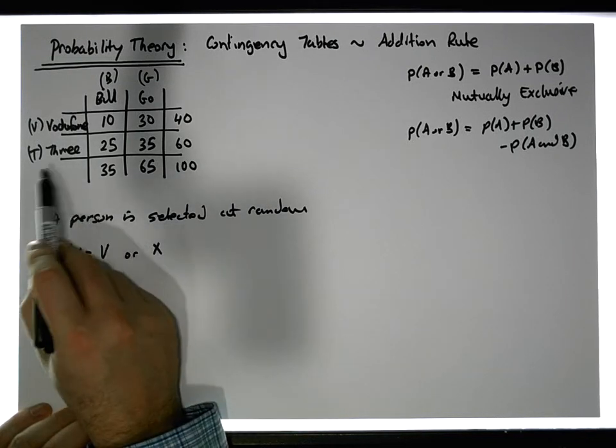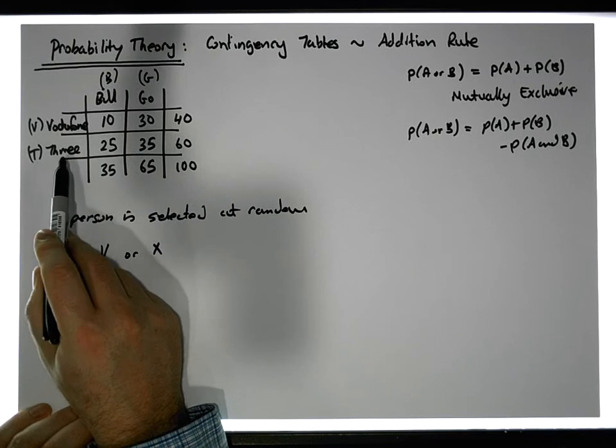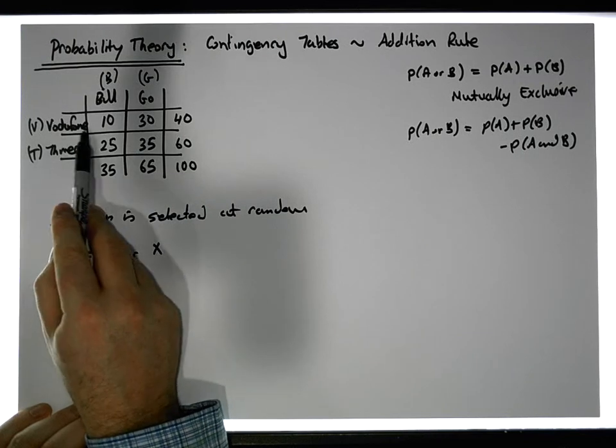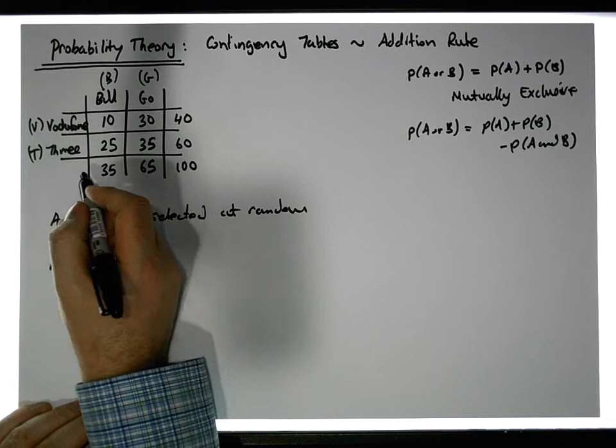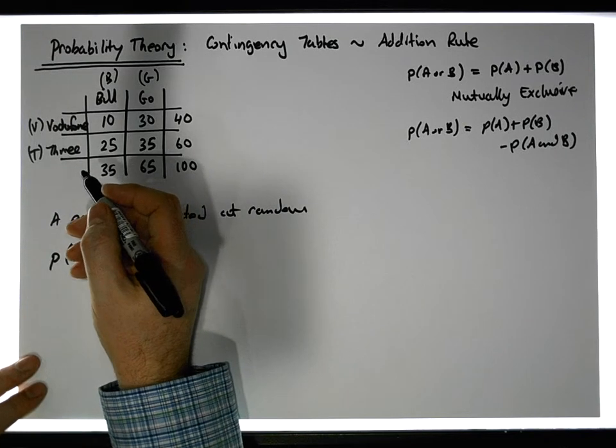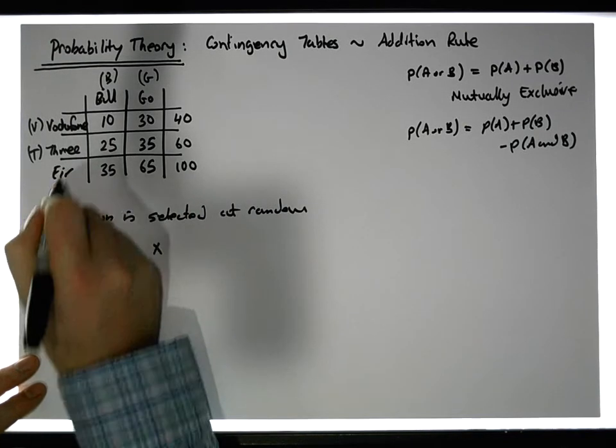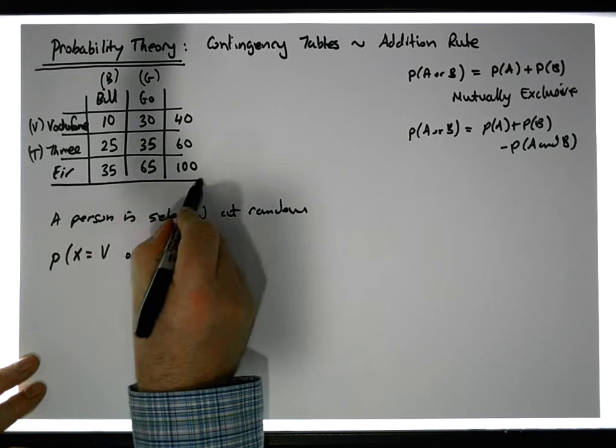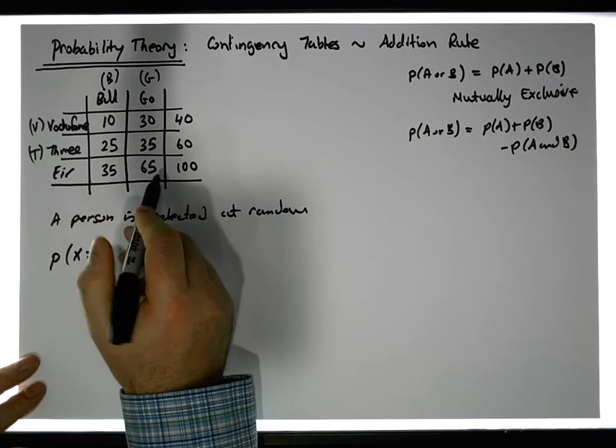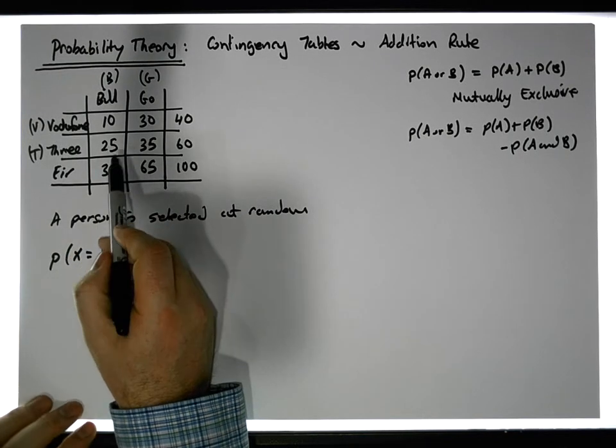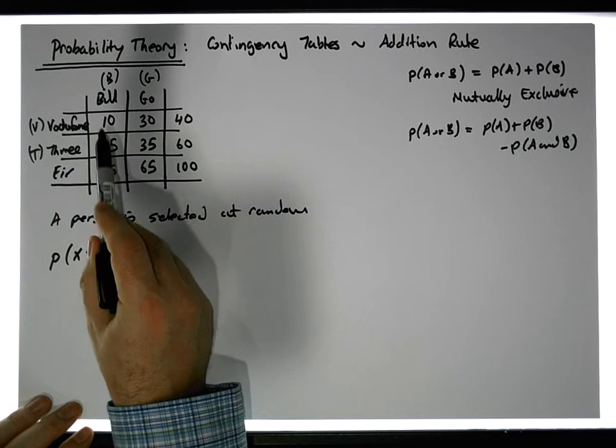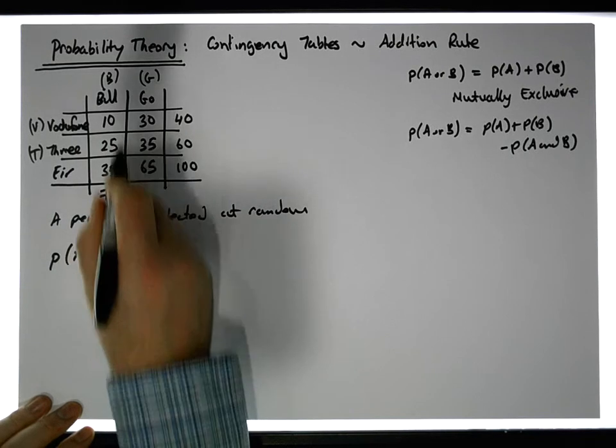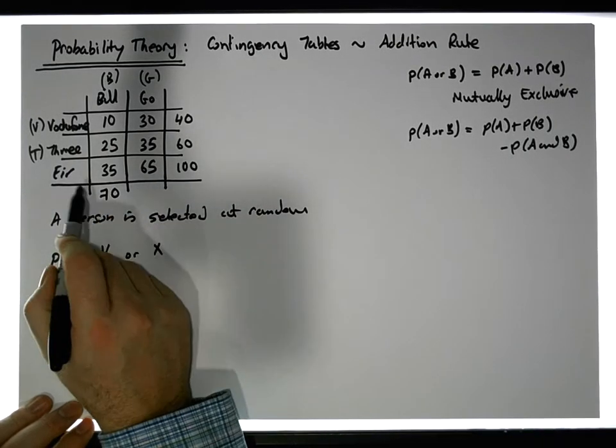To make it more interesting, we probably need another level. Let's say we have Vodafone, Three, and Air—another service provider. So our totals are actually changing now.